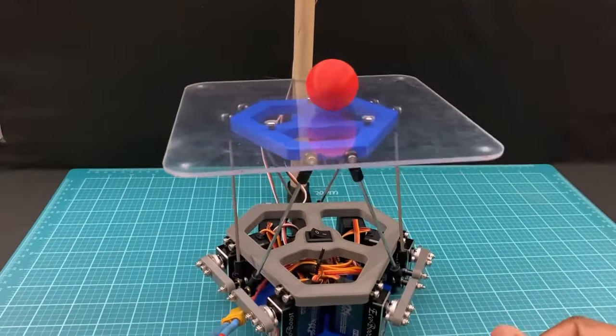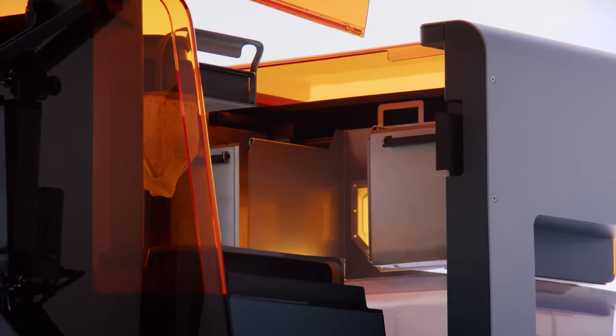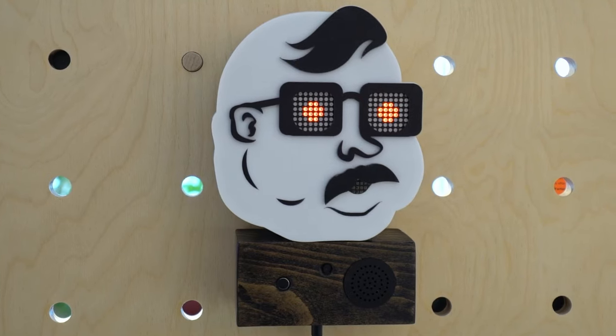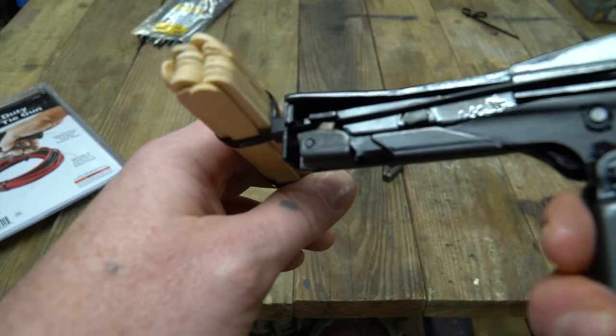This week on Maker Update, a really wobbly table, Formlabs new automation ecosystem, a robot that shames you, a robot that inspires you, changing prices, and the zip tie tip omnibus.